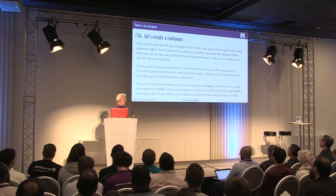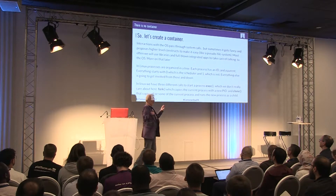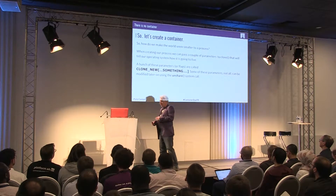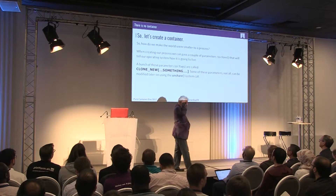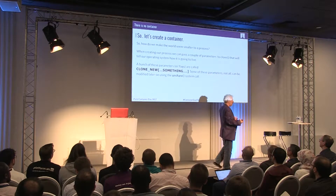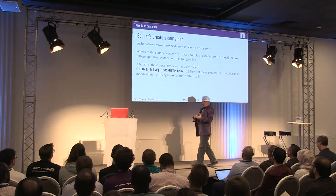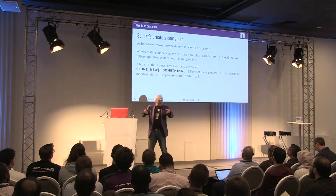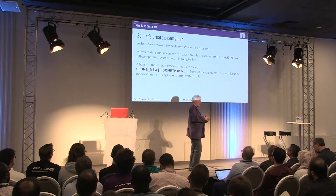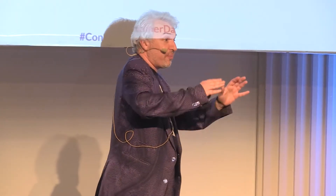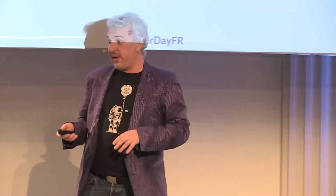In Linux we're going to start processes — we have three ways to do that. When we run a process, how do we make it so that the world seems smaller to it? When we start the process, we can set a certain number of flags and parameters. We use the clone system call to run the process. We tell it: it's the same process running, but it sees the world a bit differently. And we have a bunch of parameters called clone_new_something.